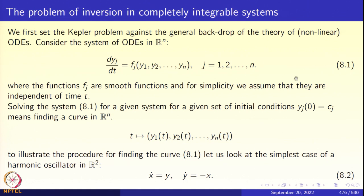What does it mean to solve equation 8.1? It means that for a given set of initial conditions, yj(0) = cj, j = 1, 2, ..., n, we have to find a solution of 8.1 — which means we have to find a trajectory (y1(t), y2(t), ..., yn(t)). This can be thought of as a curve in R^n. The idea is to find a specific curve in R^n.